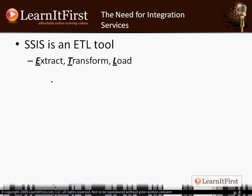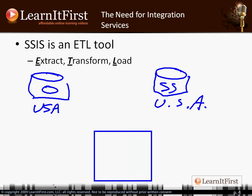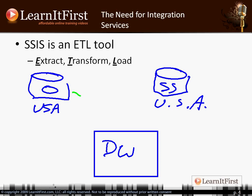A lot of times SSIS is all about data, so you'll be drawing little diagrams on paper at lunchtime, during a meeting, or on a whiteboard. You'd say: here's the Oracle database with 'USA', here's SQL Server, and here's the data warehouse - DW. We need to extract from Oracle and SQL Server, transform into 'United States', and then load into the data warehouse. This is what SSIS is made for. It's an ETL tool - it hooks up to all kinds of different data sources, can do all kinds of transformations, and can load into all kinds of different destinations as well.